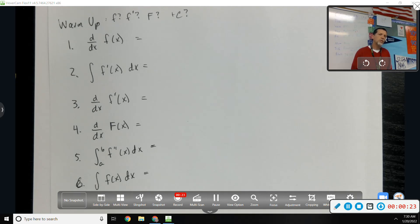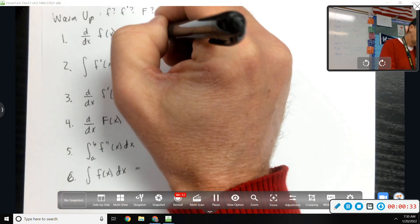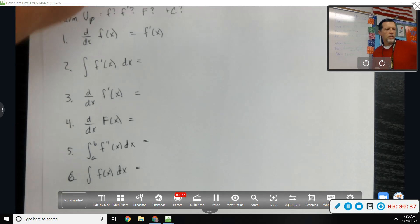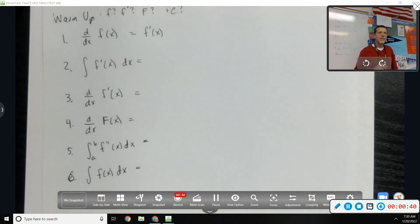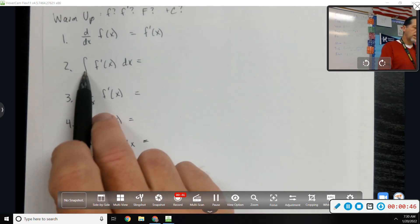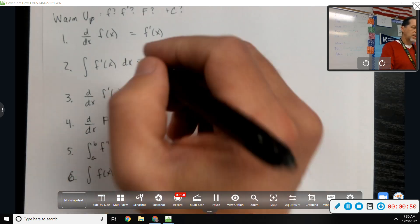So the first one, don't overthink that. What's the derivative of f? f prime. The second one, what's the anti-derivative of f prime? The anti-derivative of the derivative is f.